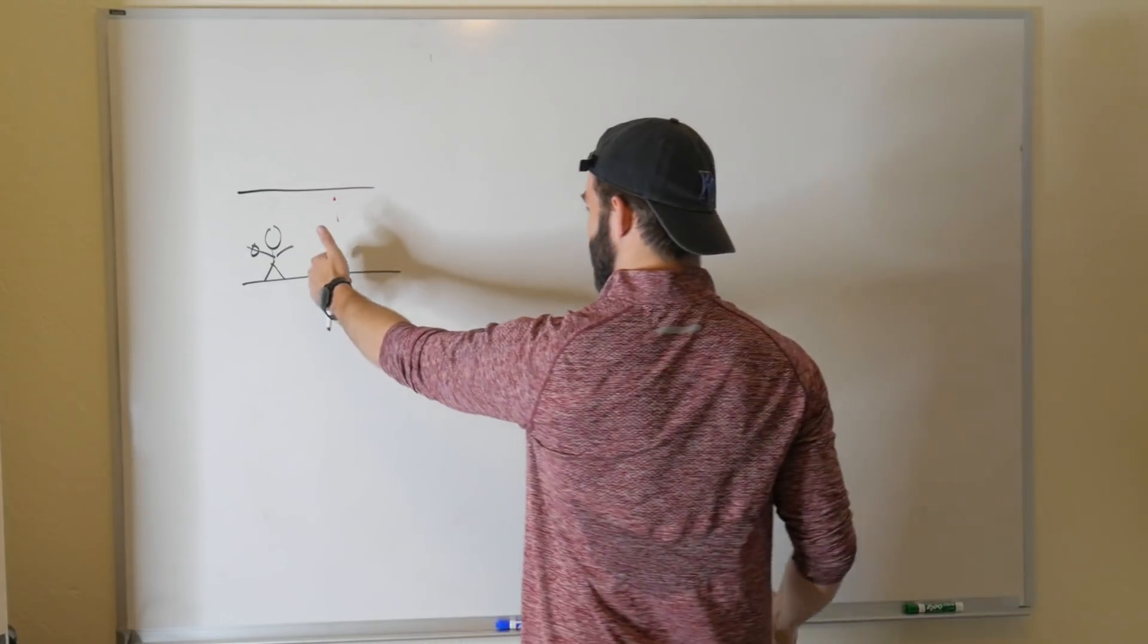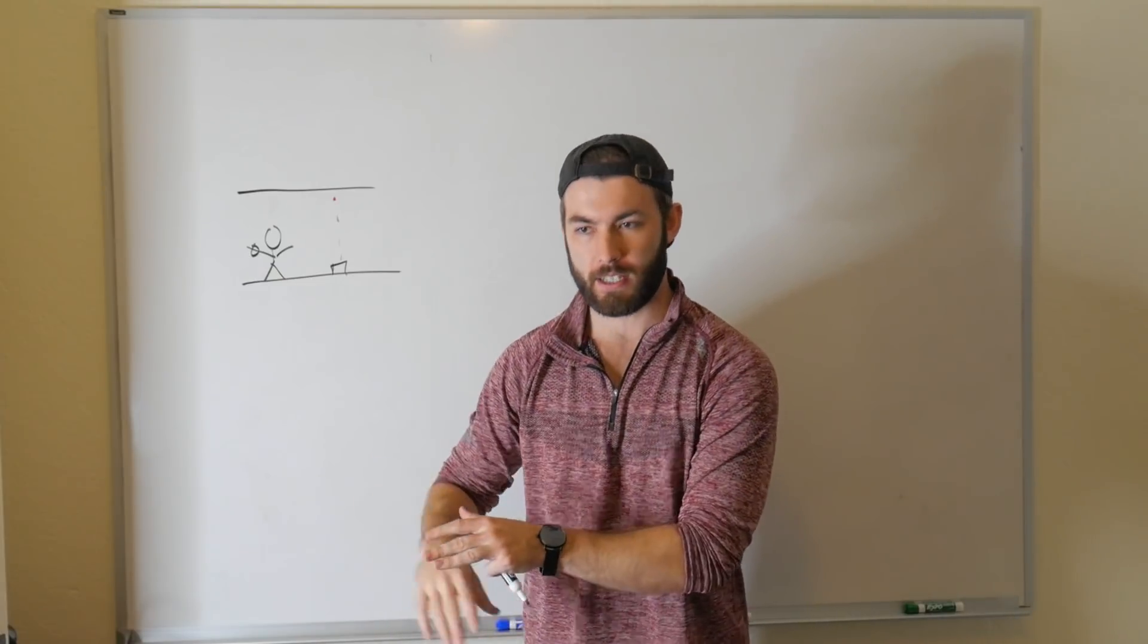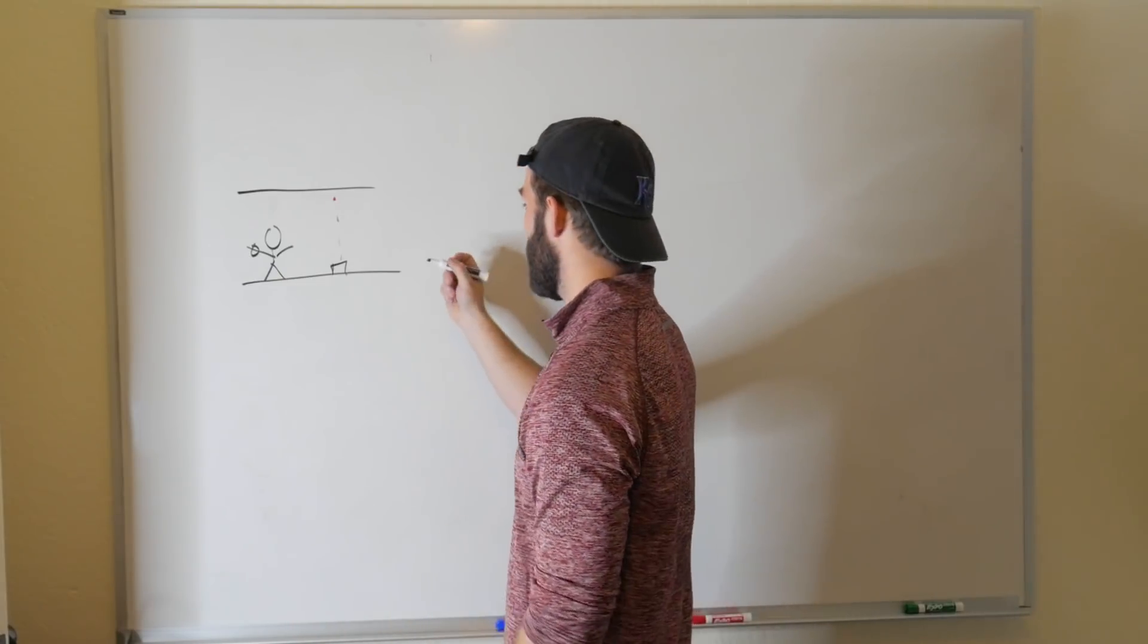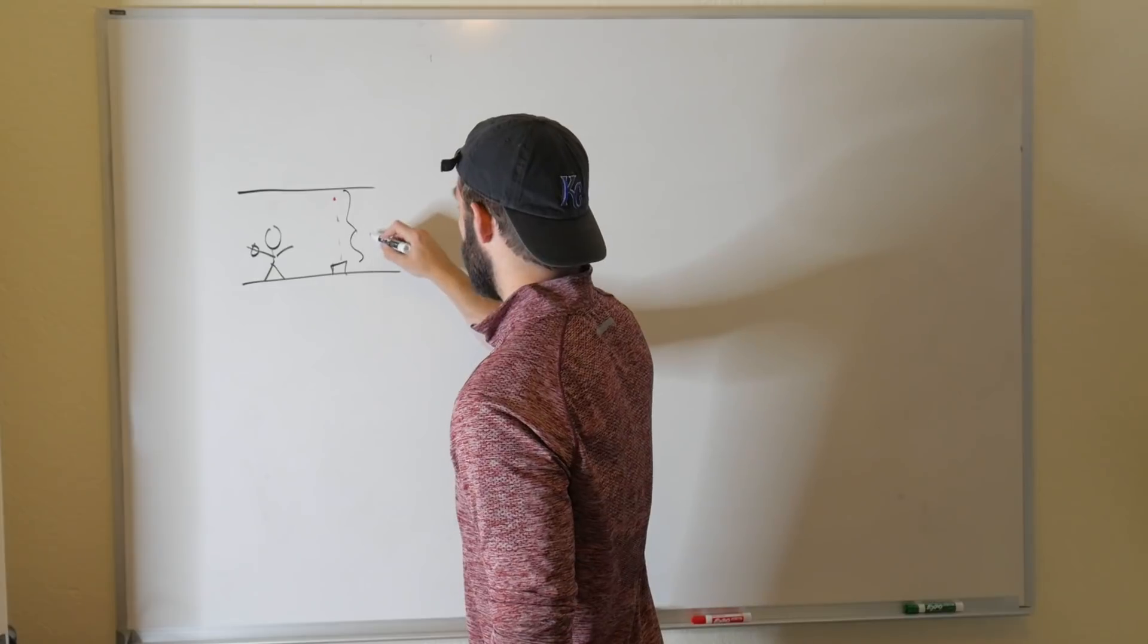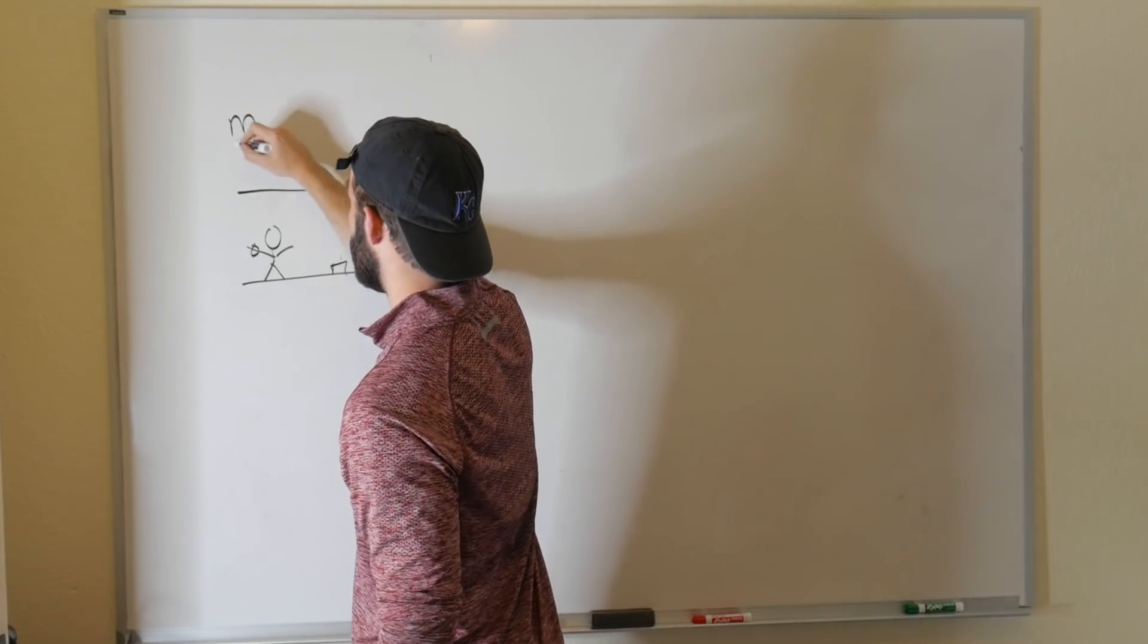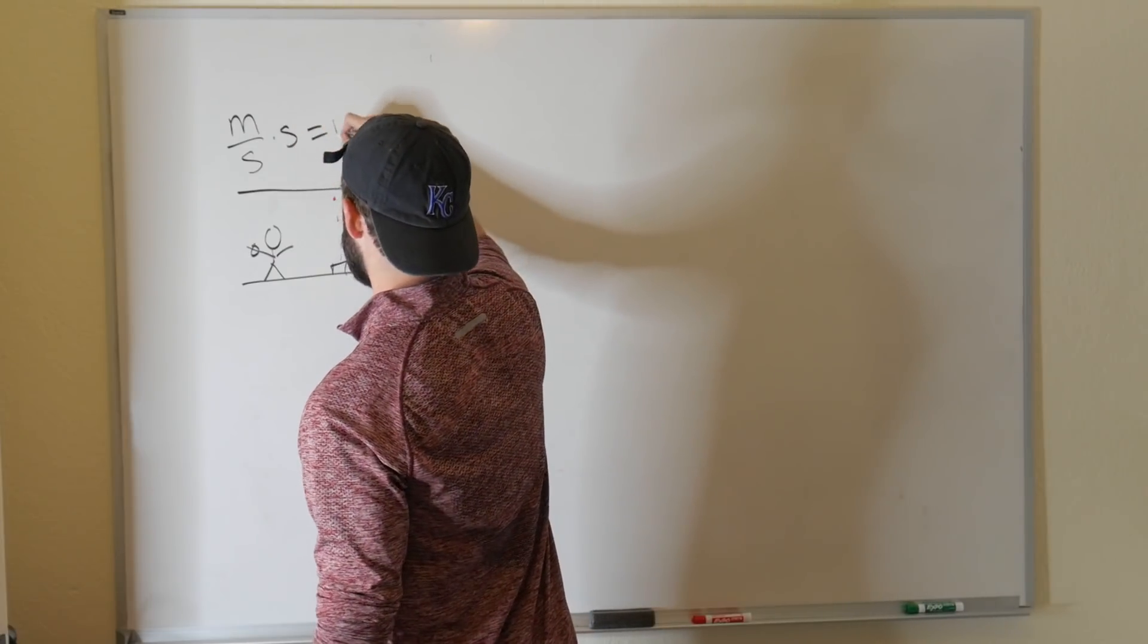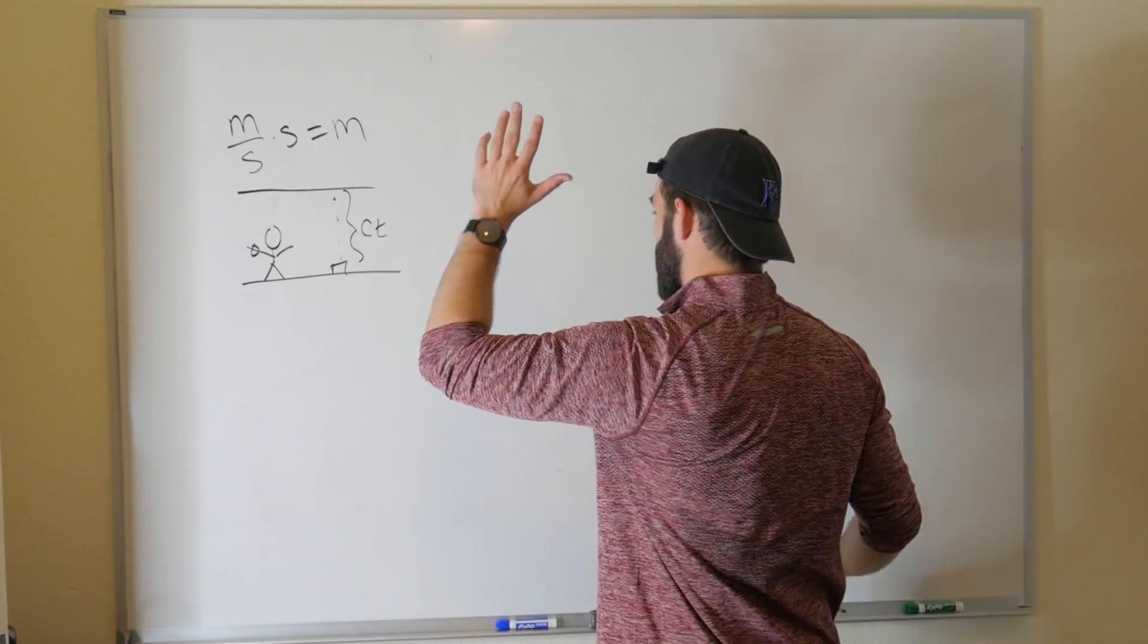The distance that this little photon is traveling is going to be how fast it's traveling times the time it took it to do so, right? So this distance here is just C times T. Dimensionally, this works out. C has units of meters per second, and then time has units of seconds, so this whole thing has units of meters. So this is a distance. Awesome.